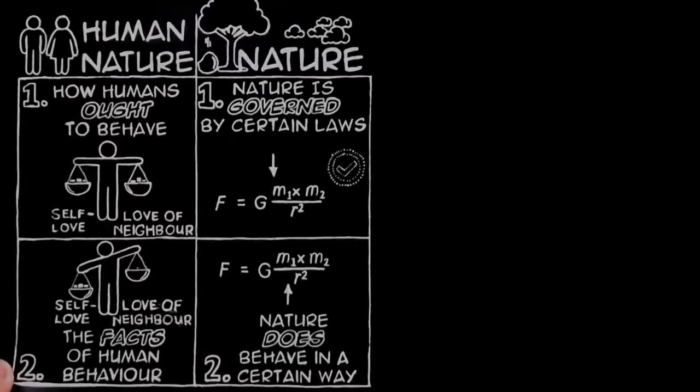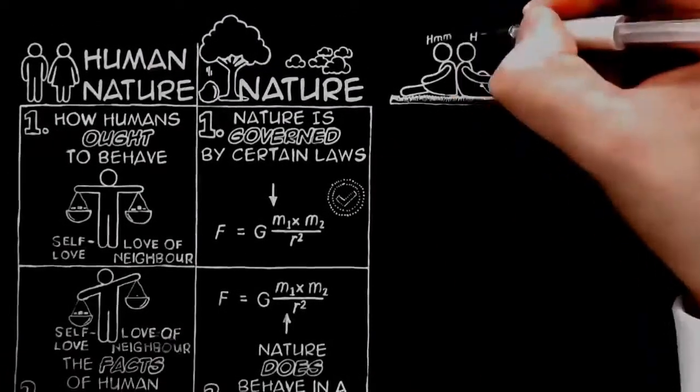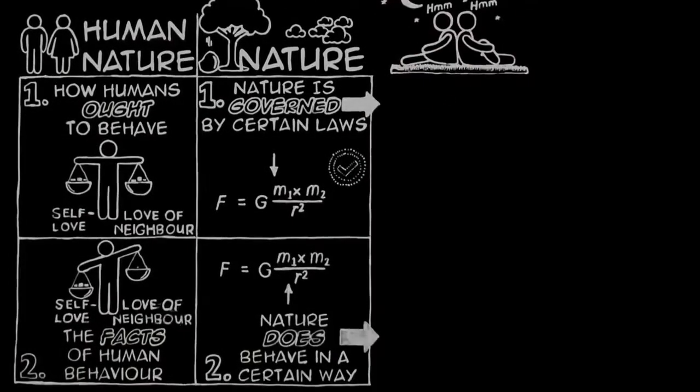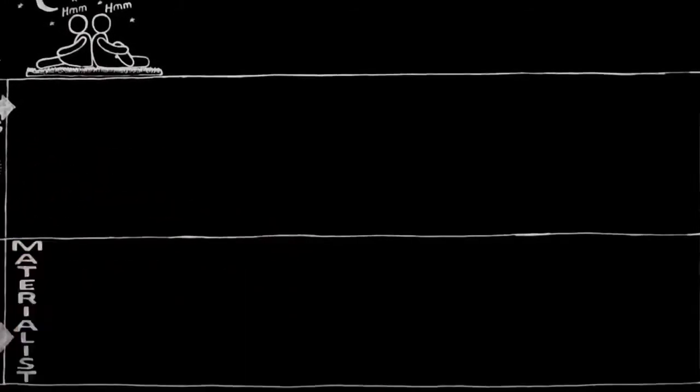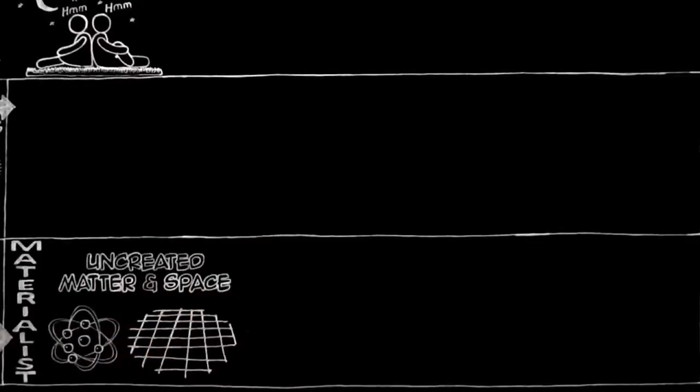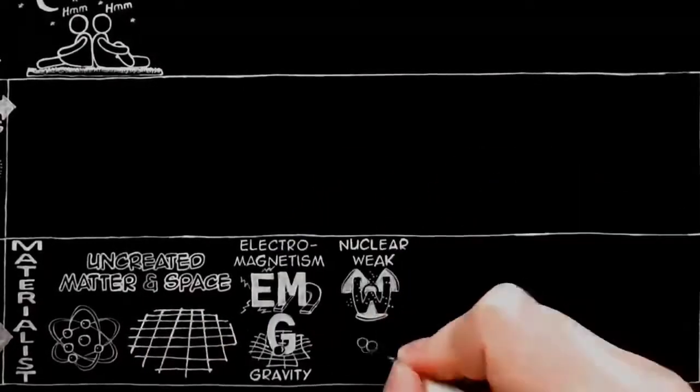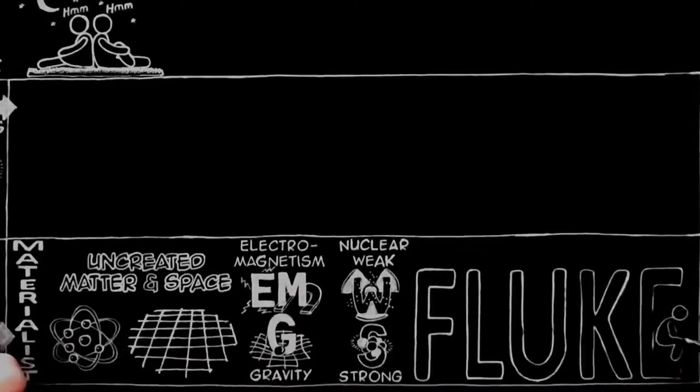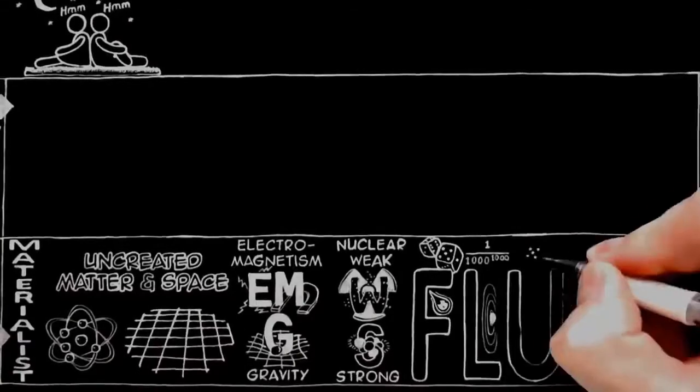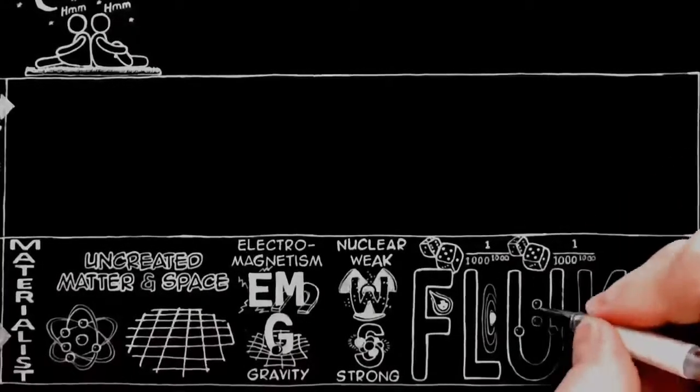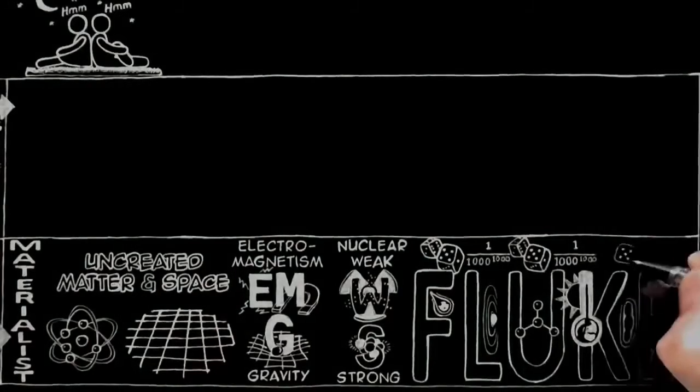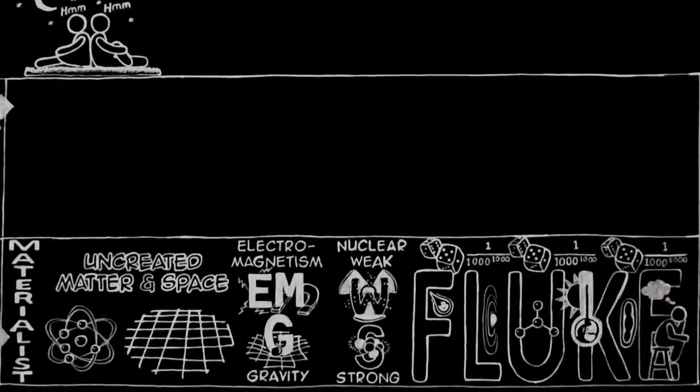I now want to consider what this tells us about the universe we live in. Ever since men were able to think, they have been wondering what this universe really is and how it came to be there. And very roughly, two views have been held. First, there is what is called the materialist view. People who take that view think that matter and space just happen to exist, and always have existed. Nobody knows why. And that the matter, behaving in certain fixed ways, has just happened, by a sort of fluke, to produce creatures like ourselves, who are able to think. By one chance in a thousand, something hit our sun and made it produce the planets. And by another thousandth chance, the chemicals necessary for life and the right temperature occurred on one of these planets, and so some of the matter on this earth came alive, and then, by a very long series of chances, the living creatures developed into things like us.